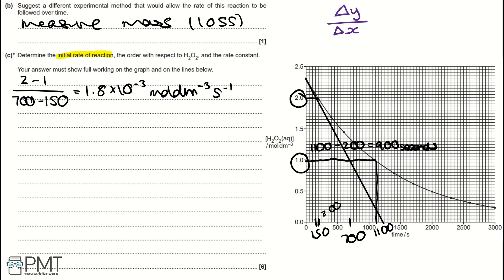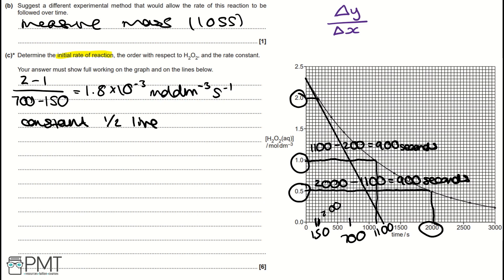We need two half-lives to comment on the order of reaction. Our next half-life uses concentrations 1 and 0.5 mol dm⁻³. Following 0.5 across to the graph, it lands at 2,000 seconds. So the second half-life is 2,000 − 1,100 = 900 seconds. Since both half-lives are constant at 900 seconds, it is first order with respect to hydrogen peroxide.